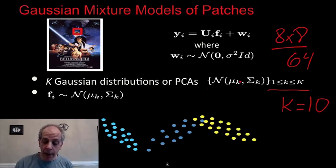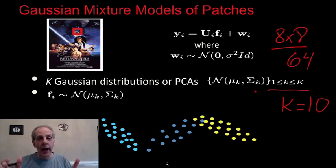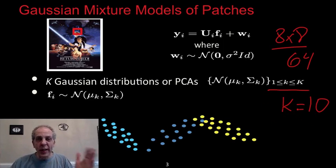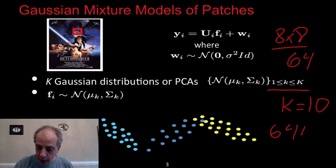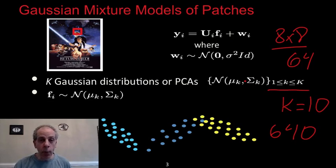A Gaussian model is equivalent to a PCA, or principal component analysis. The covariance matrix gives us eigenvectors and eigenvalues, and the eigenvectors give us a dictionary — 64 atoms per Gaussian. So with 10 Gaussians we end up with a dictionary of 640 atoms, but in a very particular block form: each block of 64 atoms are the eigenvectors corresponding to one covariance matrix.